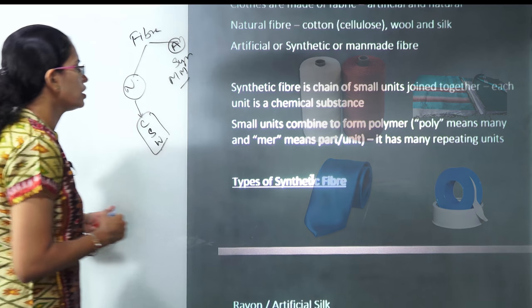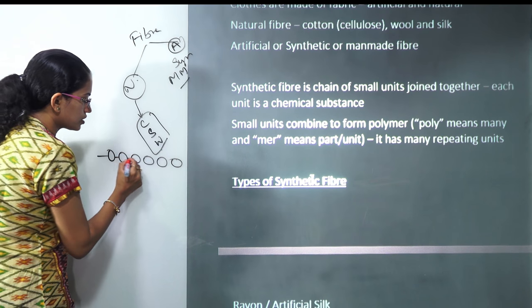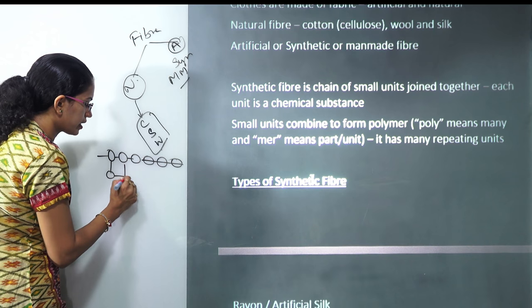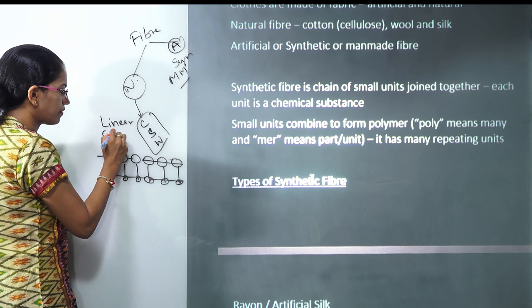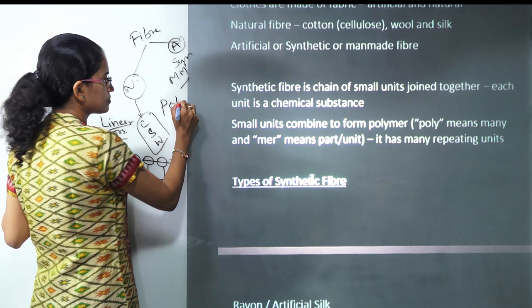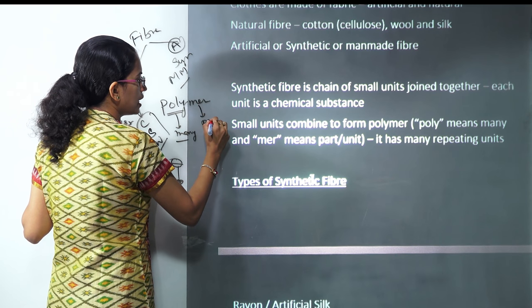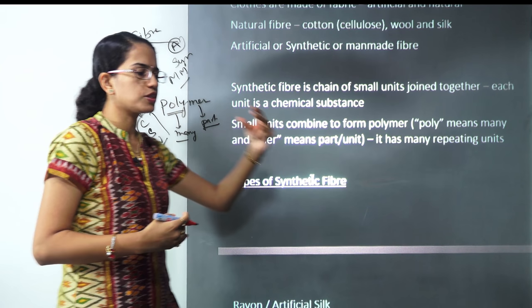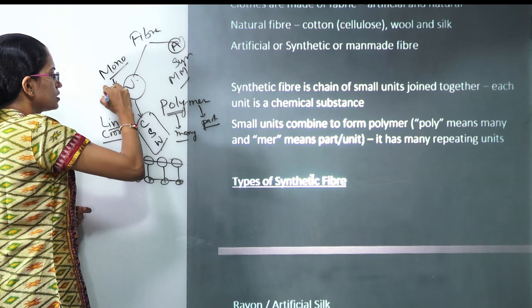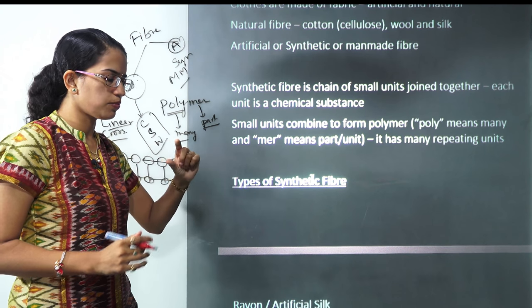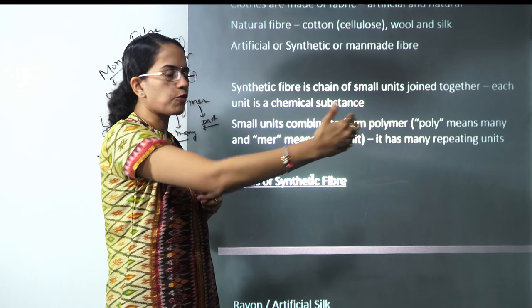When we say a synthetic fiber, it's a kind of chain of small units that are joined together. These units could be joined in a linear fashion or in a cross-linked fashion. Now these are made up of polymers. Poly means many and mer means part, so many repeating units joined together form a polymer. If I say monomer, mono means one — it's just one unit. Many monomers join to form a polymer. That's how we understand the formation of a synthetic fiber.